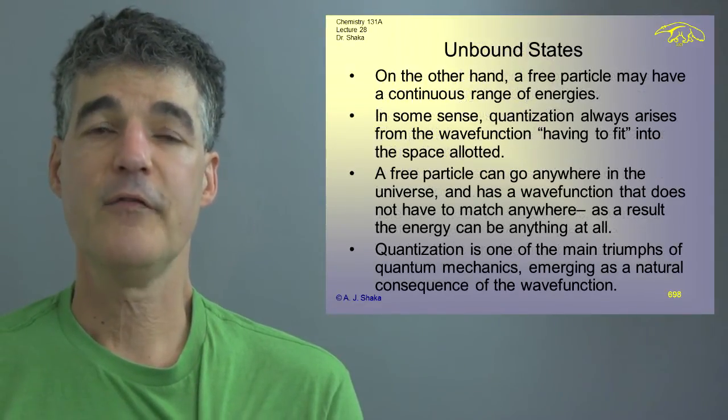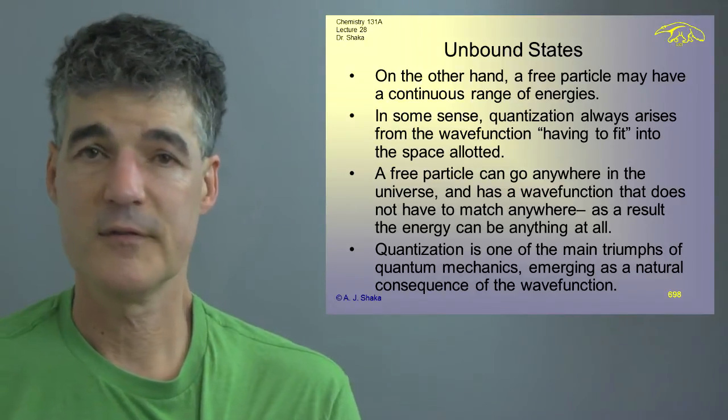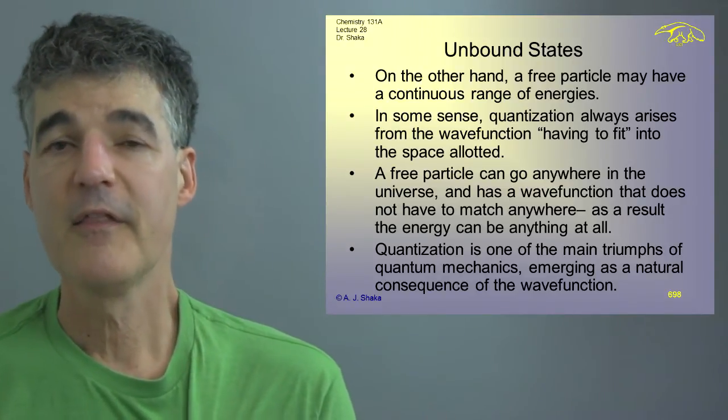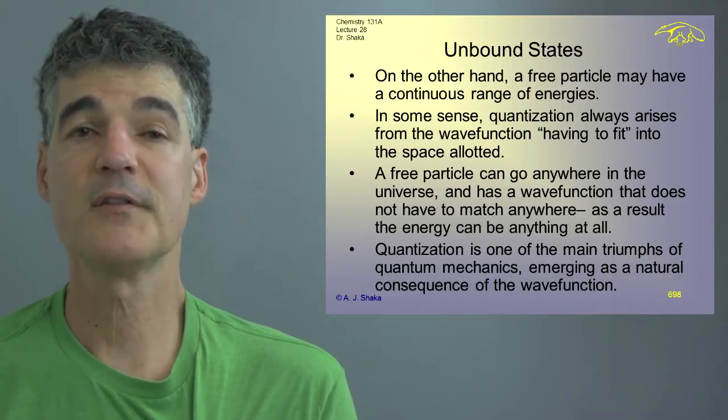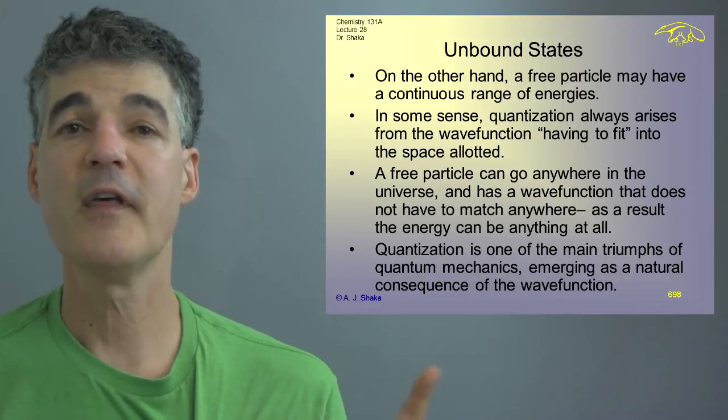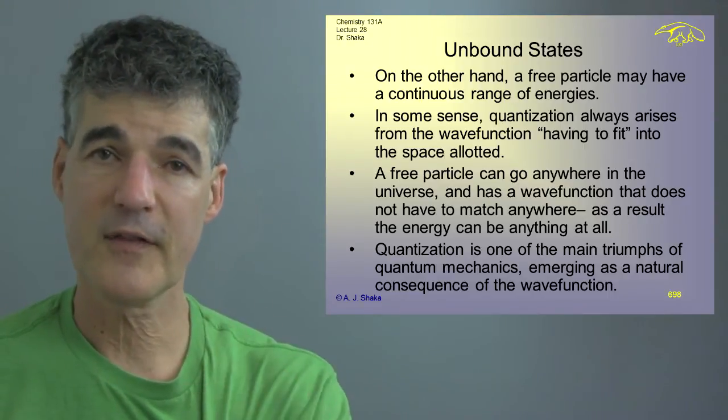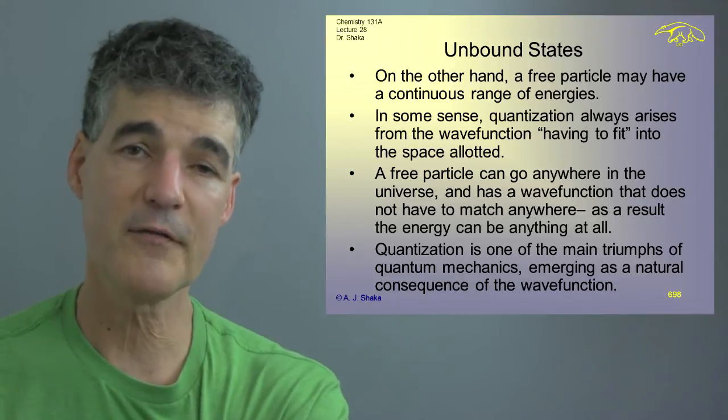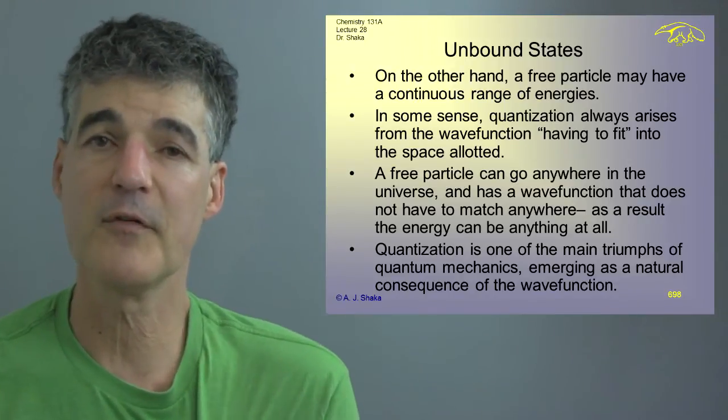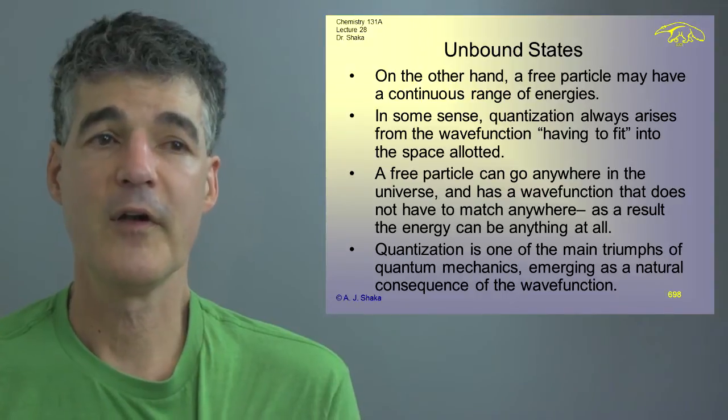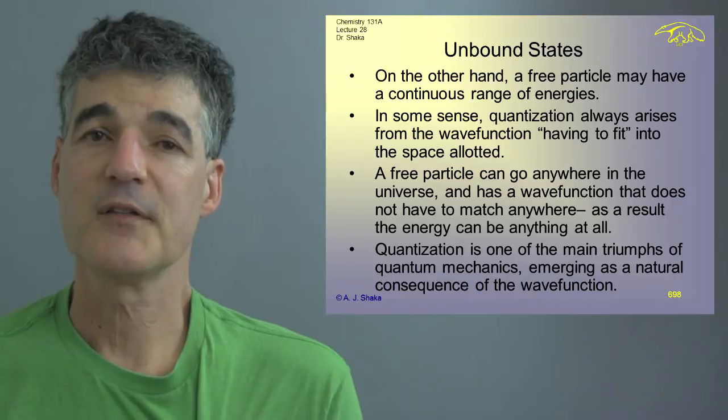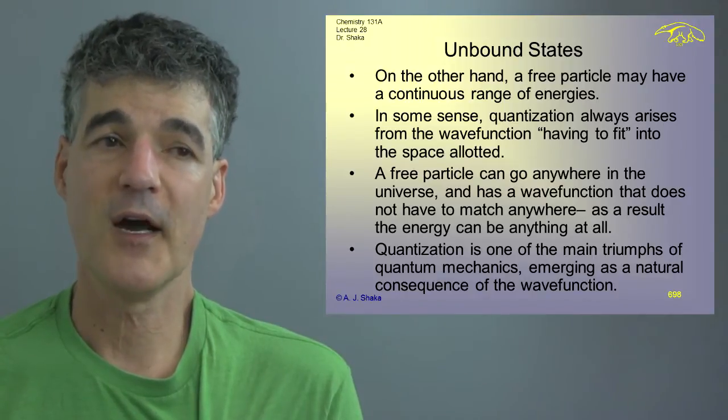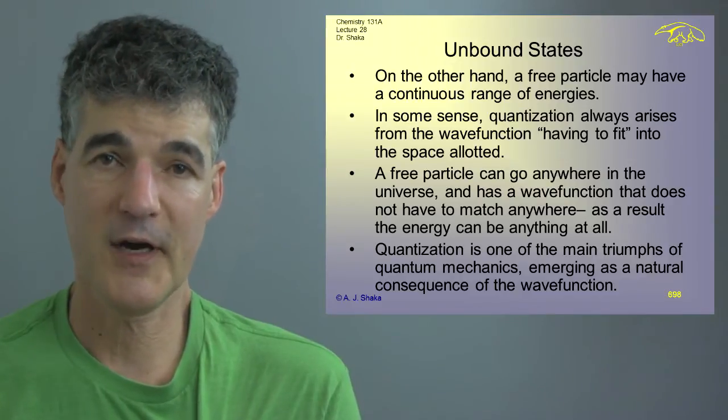On the other hand, if we have an unbound state, or they're just free to go anywhere, then the particle can have a continuous range of energies. Why? Because the wave function doesn't have to fit into anything. And then we've derived that the wave function looks like a corkscrew, corkscrewing left or right depending whether the momentum of the particle is positive or negative. And so, as I mentioned, in some sense, quantization always arises because the wave function has to fit somehow into a confined space.